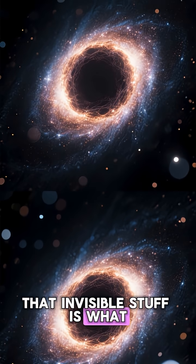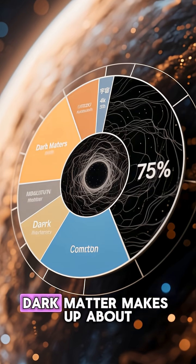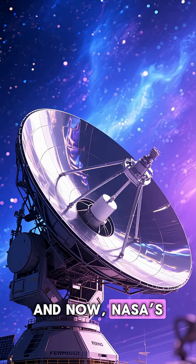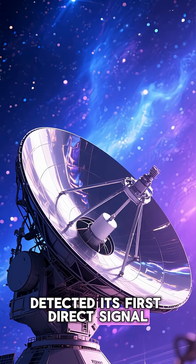That invisible stuff is what we call dark matter. Scientists now think dark matter makes up about 85% of all matter in the universe. And now, NASA's Fermi Gamma Ray Space Telescope might have just detected its first direct signal.